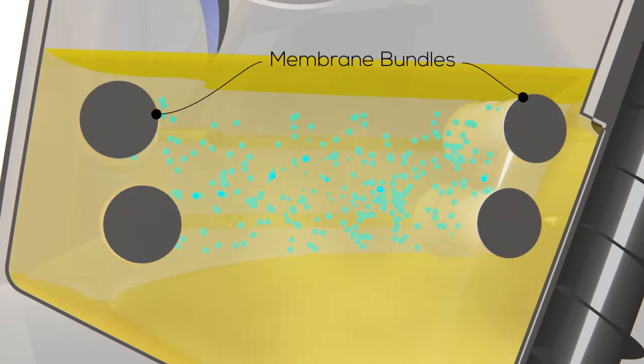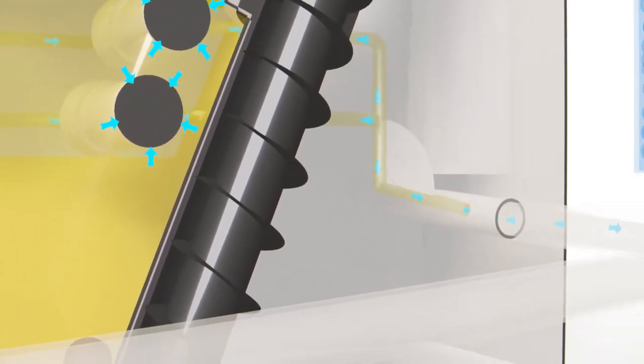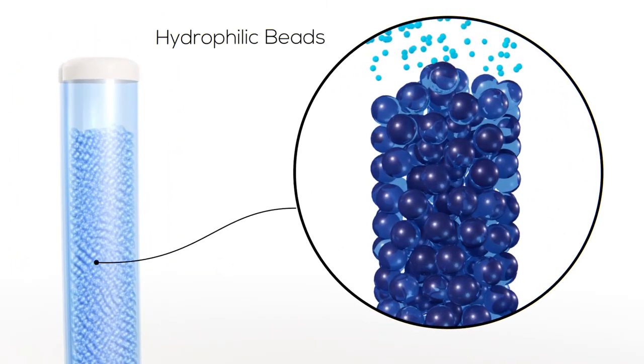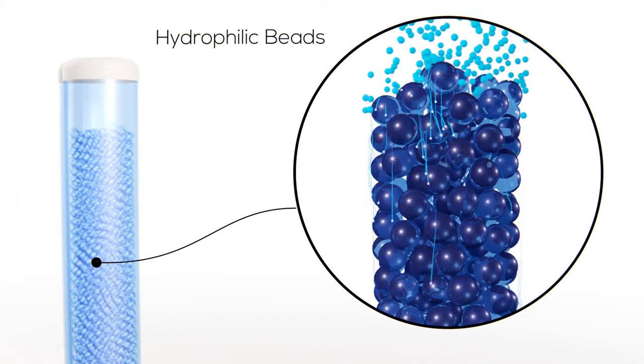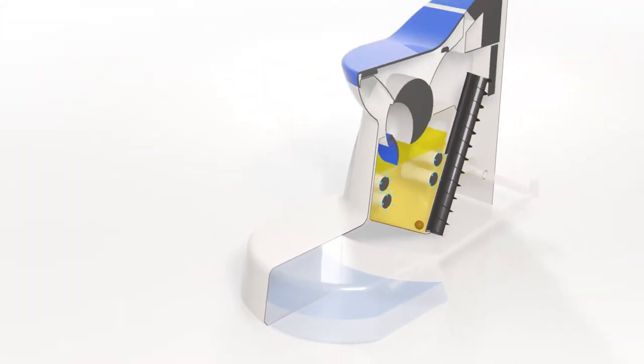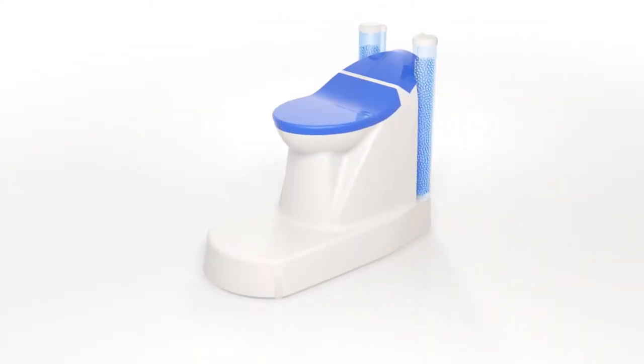Pure water in vapor form, without any pathogens, then passes into the membrane bundles, where it's driven along by a sweep gas. The vapor then enters the large columns at the back of the toilet, which contain nano-coated hydrophilic beads. As the vapor passes over the beads, it condenses. The pathogen-free water then drips down a collection pipe and drains into a water tank, which doubles as a step at the front of the toilet.